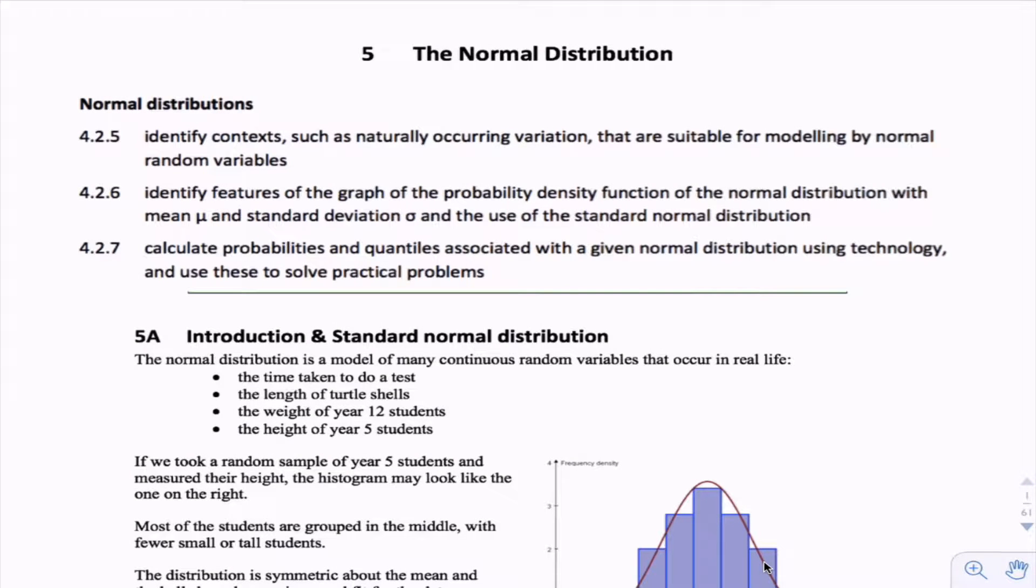Hi there everyone. In this video we're going to be going through the normal distribution. This is the first video and a continuation from the previous unit where we were talking about continuous random variables. The normal distribution is a type of continuous random variable.